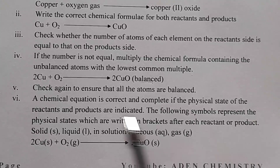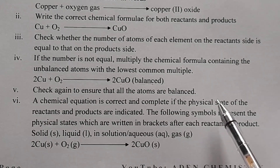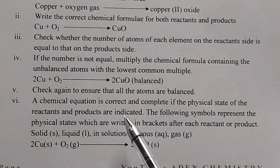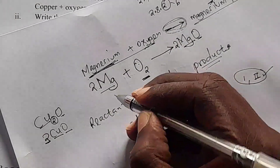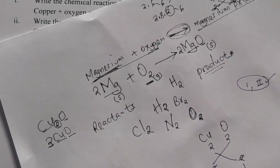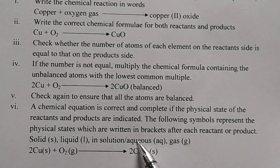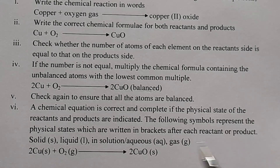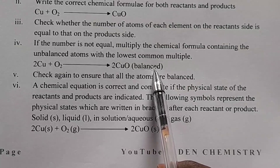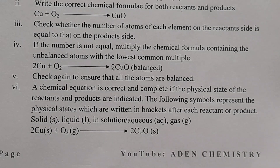Step 4: check again to ensure all atoms are balanced. Step 5 (final): a chemical equation is correct and complete if the physical states of the reactants and products are indicated. The symbols are: solid (s), liquid (l), aqueous solution (aq), and gas (g), written in brackets after each reactant or product. For our equation, copper is solid (s), oxygen is gas (g), and copper oxide is solid (s). That's the end of our lesson. Next class, we are going to do balancing chemical equations. Thank you.